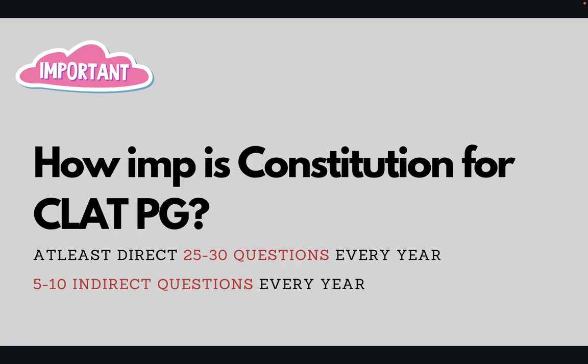Coming to the topic — constitutional law and its importance for the CLAT PG exam. You may be aware that the constitution, along with a couple of other subjects, forms the core of almost all law entrance exams in India. Particularly for CLAT PG, there will be around 25 to 30 questions every year directly related to the constitution, and there can also be some 5 to 10 indirect questions. For example, if they're asking questions on labor law and it's a passage on labor law, it may have one or two questions related to the constitution as well. So you can expect anywhere between 40 to 50 questions regarding the constitution either directly or indirectly. That is a huge percentage out of 120 questions and you cannot afford to miss this subject. You need to have a very good grasp on constitutional law if you want to ace CLAT PG — and not just CLAT PG, but any LLM entrance exam in India.